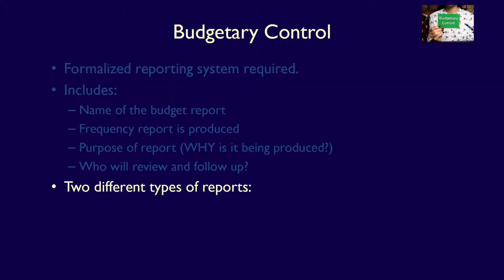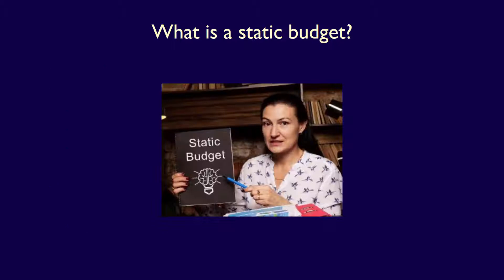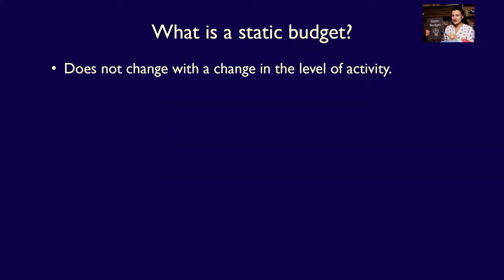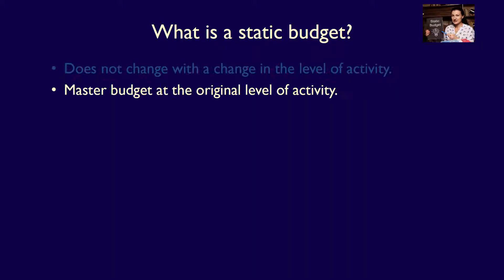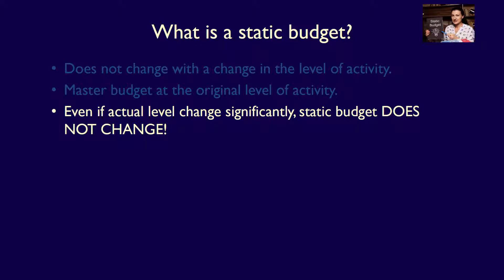Budgetary control can be based on two different types of budgets: the static budget or the flexible budget. Let's start by analyzing the static budget report. A static budget is a budget that does not change with variations in the level of activity. The static budget is the master budget at a level of activity originally used when the budget was prepared. Even if actual sales volumes change significantly from what was budgeted, the amounts listed in the static budget are not changed.